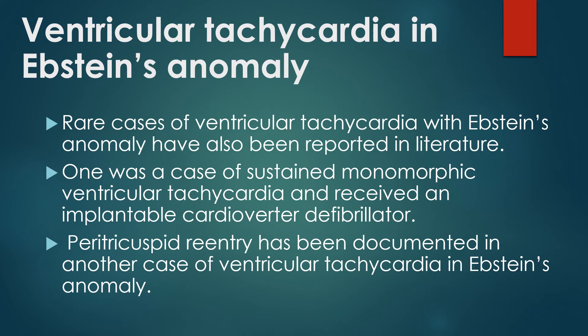One case involved sustained monomorphic ventricular tachycardia, and the patient received an implantable defibrillator. Peritricuspid reentry has been documented in another case of ventricular tachycardia in Ebstein's anomaly, where scar formation in the inferior atrialized portion of the right ventricle formed the substrate for reentrant ventricular tachycardia. Yet another young girl with Ebstein's anomaly and ventricular tachycardia received an entirely subcutaneous defibrillator.